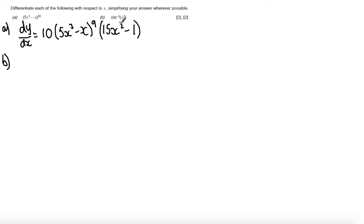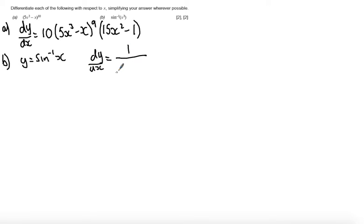Part B wants us to differentiate sine to the minus 1 of x cubed. What you have to remember is the inverse trigonometric function. We are not trying to prove how this is differentiated here. If you look in your formula booklet: if y equals sine to the minus 1 of x, then dy by dx equals 1 over the square root of 1 minus x squared. So we are going to use this with the chain rule, assuming that x is in fact x cubed — and just note that this is in the formula booklet.